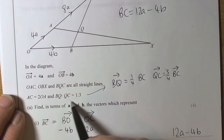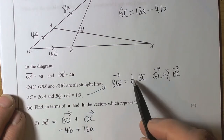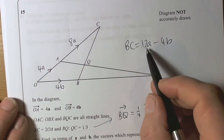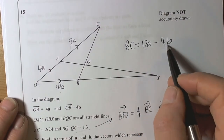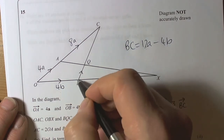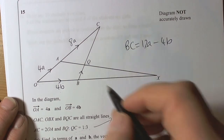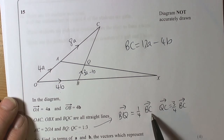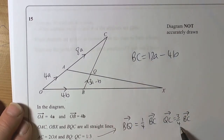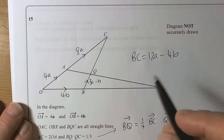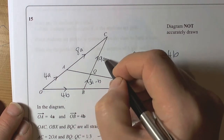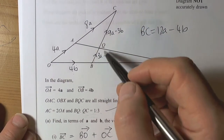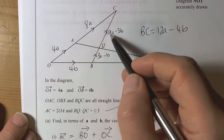We know from the ratio information that BQ is a quarter of BC. So a quarter of 12a minus 4b would be 3a minus b. So from B to Q, we know that it's going to be 3a minus b. And QC is three quarters of BC, so three quarters of that is going to be 9a minus 3b. So Q to C is 9a minus 3b.